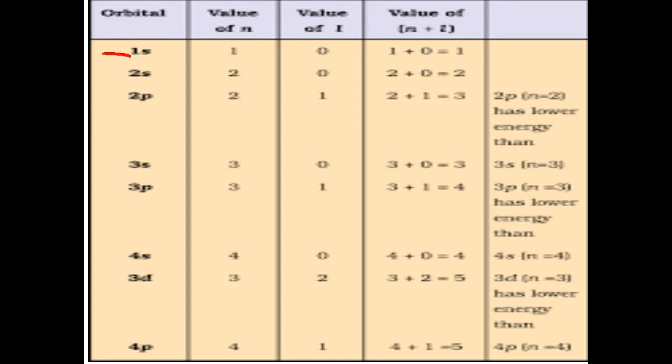And in the next case, when I calculate the n plus l value of 2p I get 2 plus 1, which is 3. And at the same time when I see the n plus l value of 3s that is 3 again. Now the rule applies here that the sub shell will be filled first which n number is smaller, so 2p will be filled first then comes the turn of 3s.